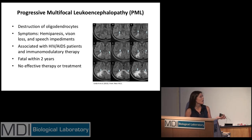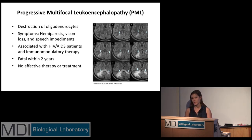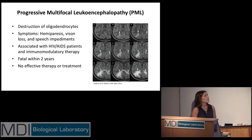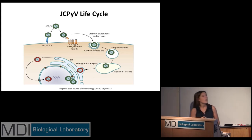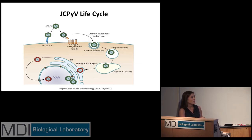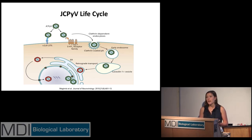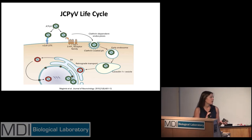Because PML is so rare, it is very hard to diagnose, and as a result we know very little about the virus itself. What we do know is based on a working schematic: the virus initially binds to alpha-2,6-linked sialic acid on LSTC receptors. At some point during the infectious cycle, the virus utilizes serotonin receptors to initiate clathrin-mediated endocytosis, after which the virus is transported through early endosomes to the ER where it undergoes partial decoding. The virus is then moved to the nucleus where transcription and replication occur, after which it is released through lytic processes.